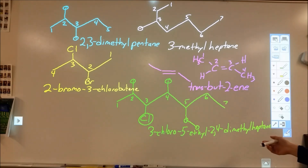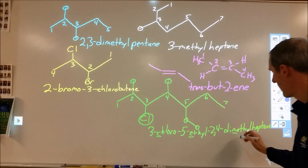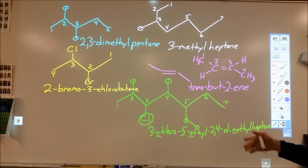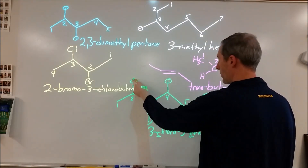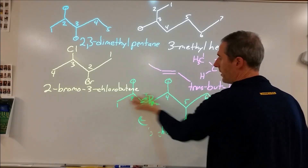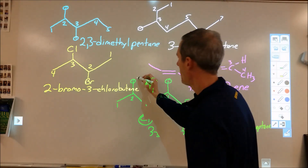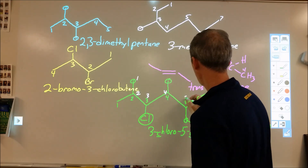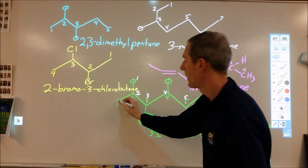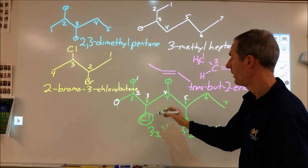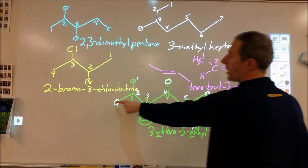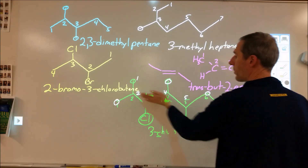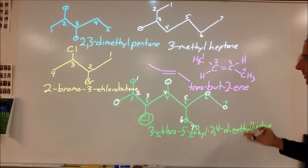A few important points from that example: substituents are listed alphabetically — chloro, ethyl, then methyl — but prefixes like di- do not count in alphabetical ordering, so dimethyl comes after ethyl based on 'm' vs 'e'. Also, I chose my numbering direction based on which end reached a branch first, not based on the size of the substituents. And note that if I had numbered from the other end, I'd still get the same answer: methyl at two, chloro at three, methyl at four, ethyl at five.